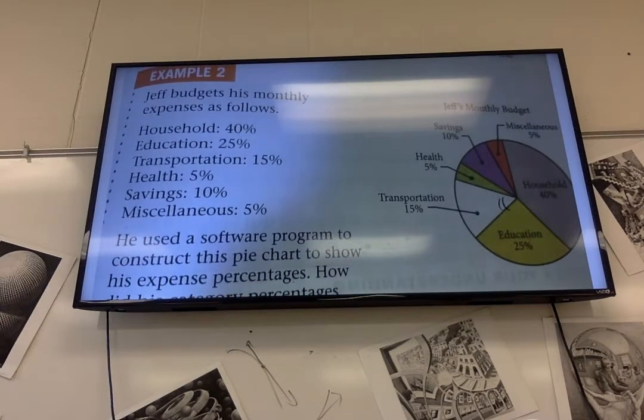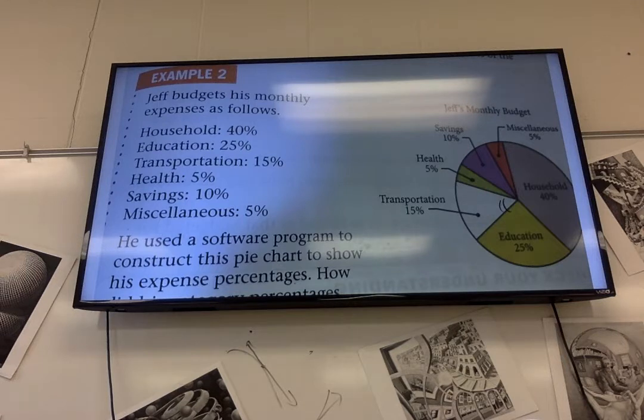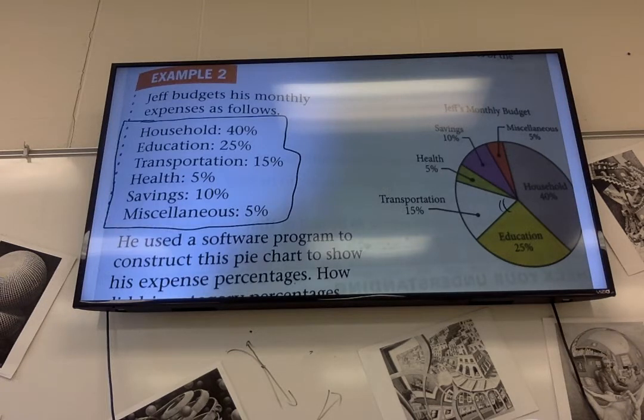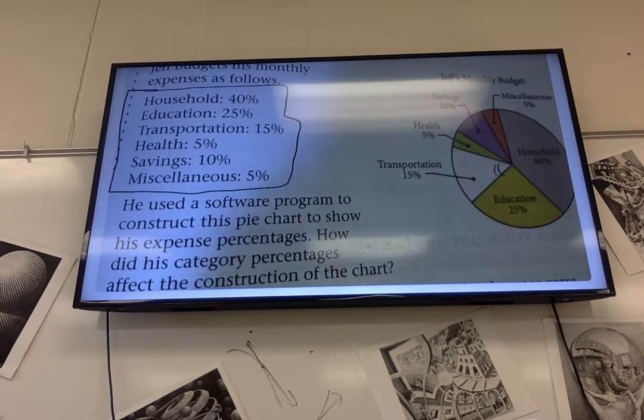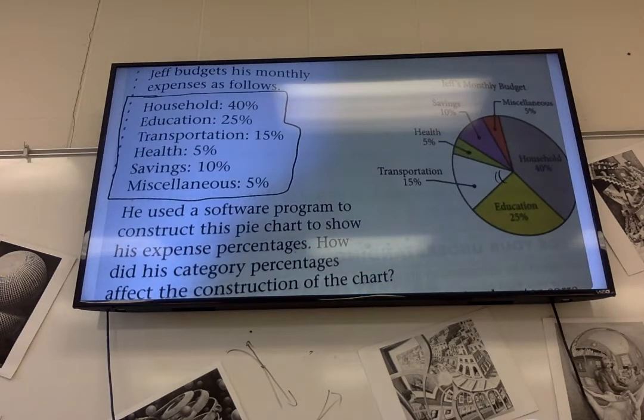Now we're moving on. Jeff budgets his monthly expenses as follows - this stuff you need to write down. Household is 40%, education is 25%, transportation is 15%, health is 5%, savings 10%, miscellaneous is 5%. He used a software program to construct this pie chart to show his expense percentages. How did his category percentages affect the construction of the chart?